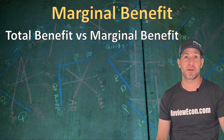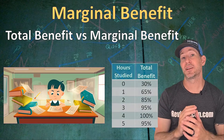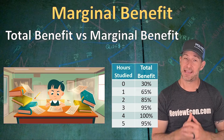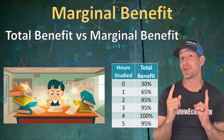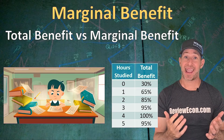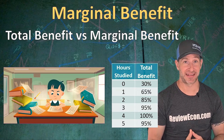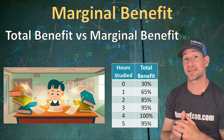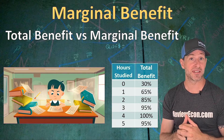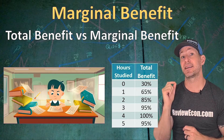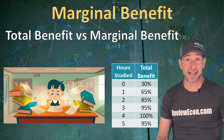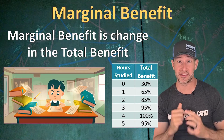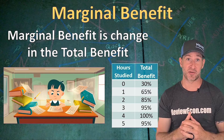Now let's say you have an economics exam tomorrow and you need to study for it. This table shows the total benefit — the different grades you could earn with different amounts of studying. If you study no hours, you're going to have a total benefit of 30% on that exam, and if you study for four hours, you're going to get 100%. Some people would think a rational student would automatically study for four hours, but decisions don't just take benefits into account — they take costs as well. But before we get to the costs, let's look at the marginal benefit.